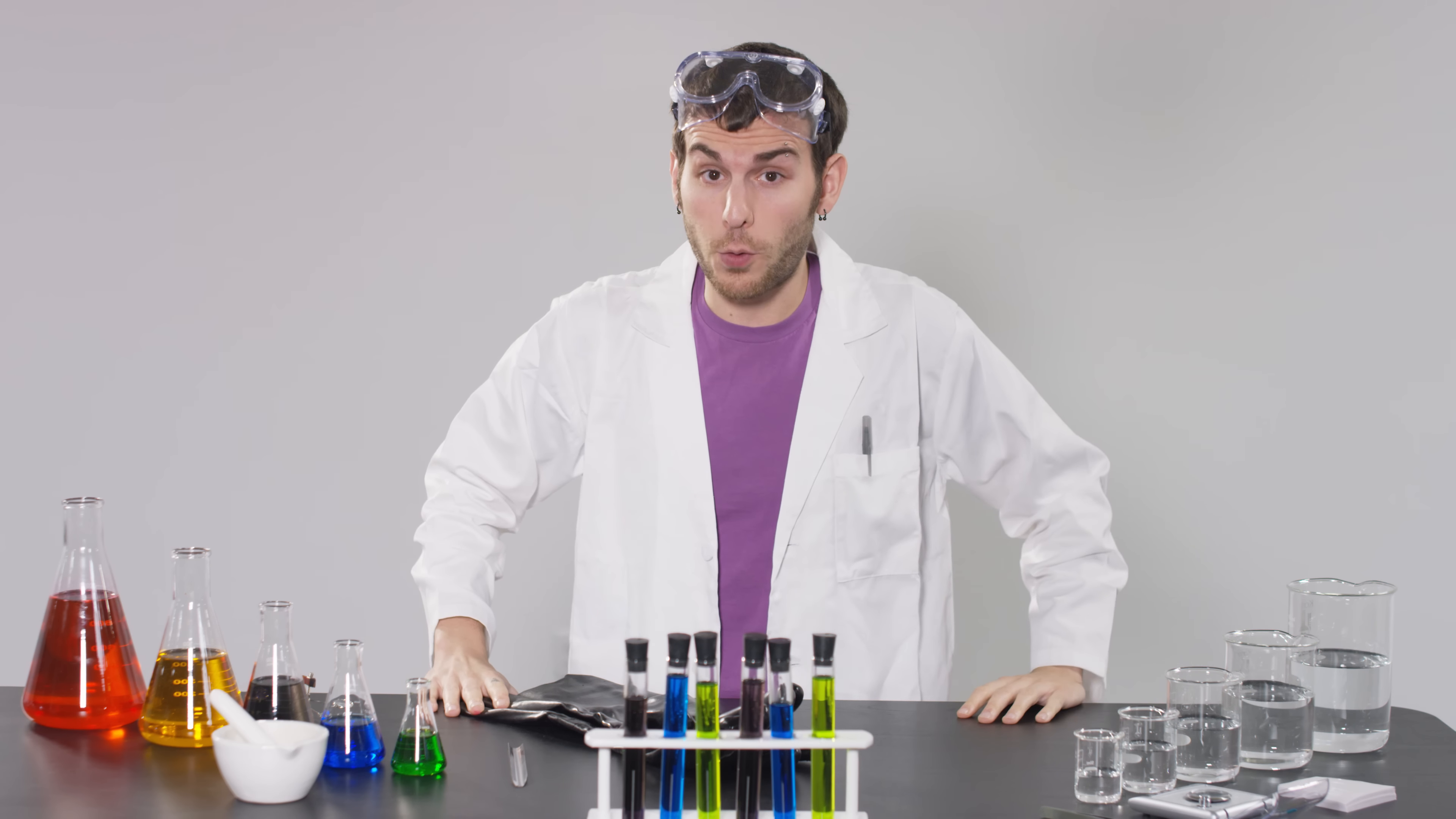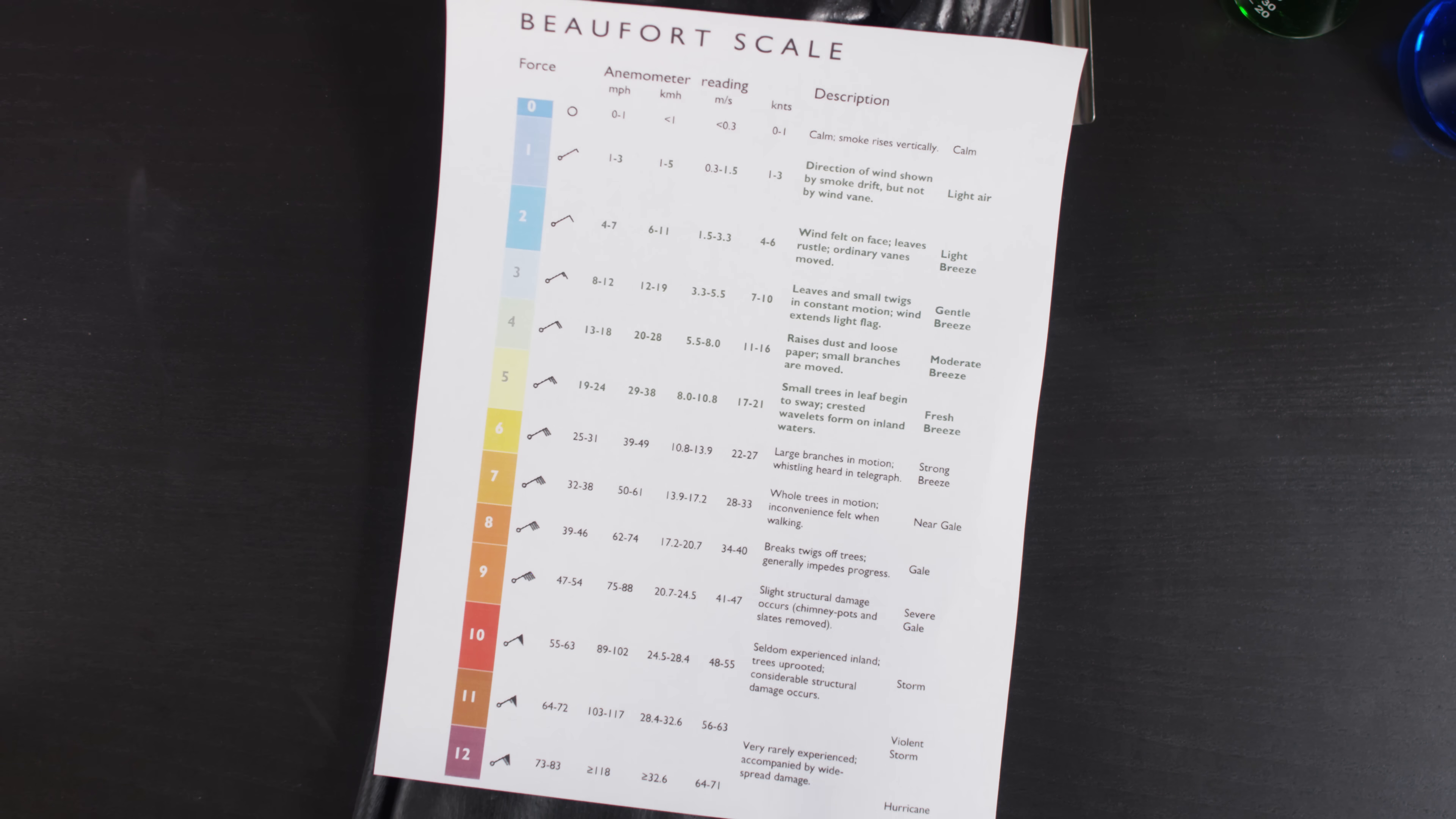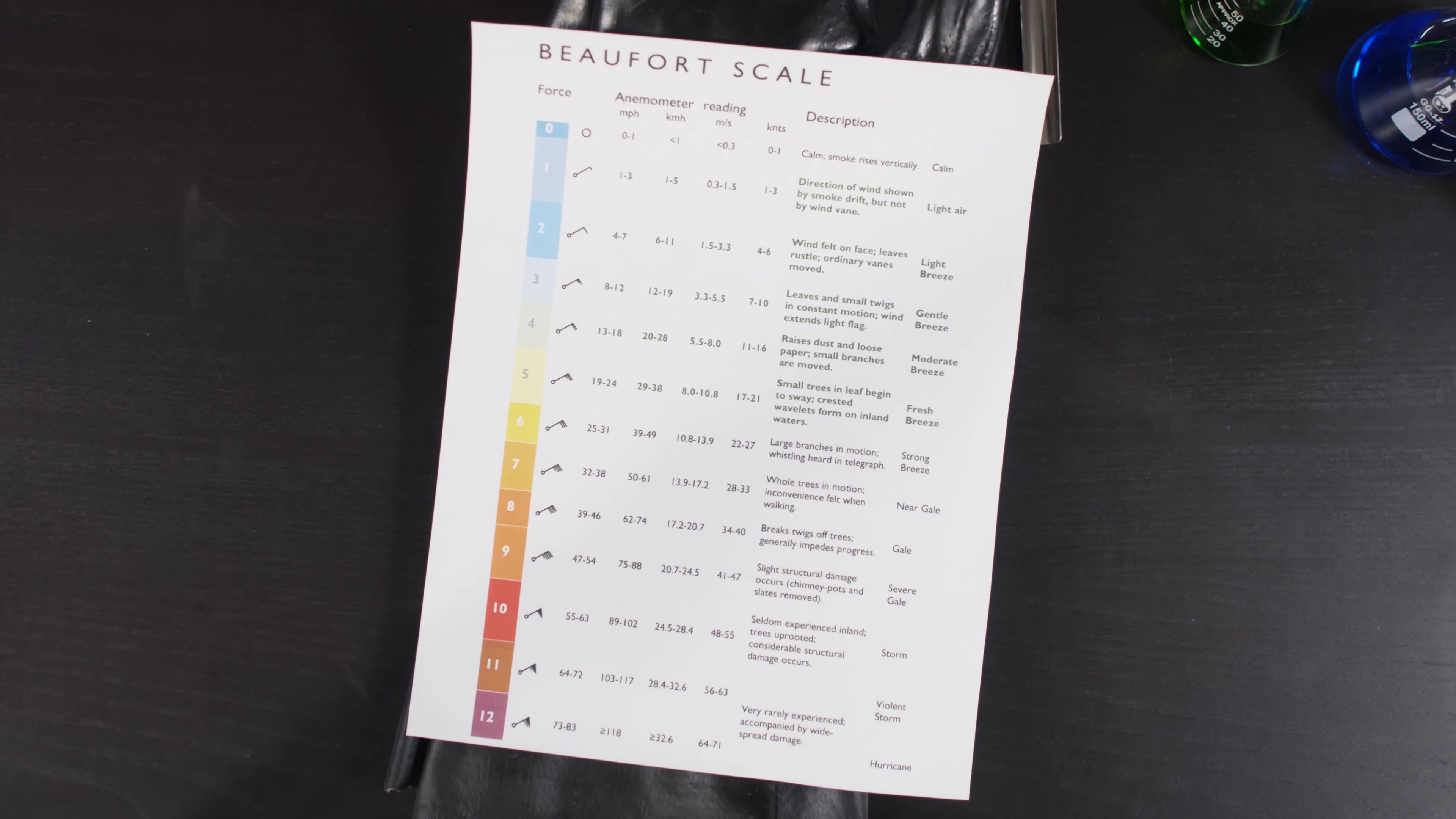Let's take a look at the Beaufort Wind Scale. One meter per second is equal to 1.9 knots, which is classified as light air. What we need to be worried about is wind speeds at 10 meters per second or higher, which would bring us to 19 knots, a fresh breeze, when small trees with leaves begin to sway. That would be enough to whisk you off.